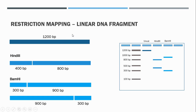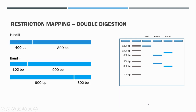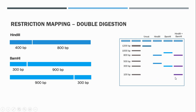In a double digestion, we treat the linear fragment with both restriction enzymes at the same time. We expose this uncut fragment to both HindIII and BamHI simultaneously and then look at the products on an agarose gel. When we restrict with HindIII and BamHI together, we end up with an 800 base pair fragment, a 300 base pair fragment, and a 100 base pair fragment.